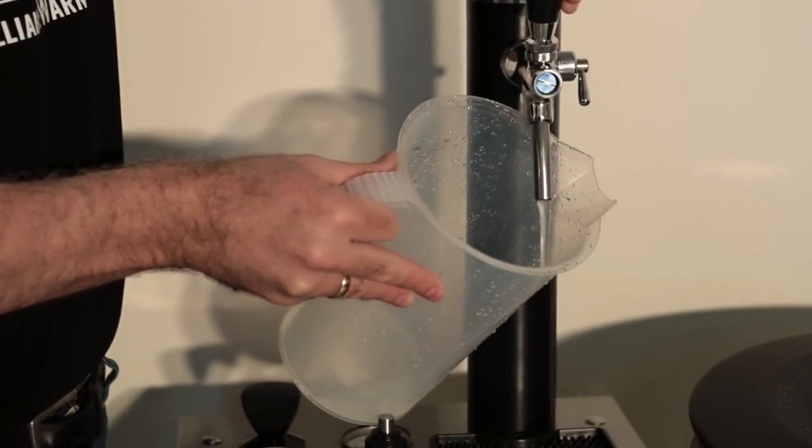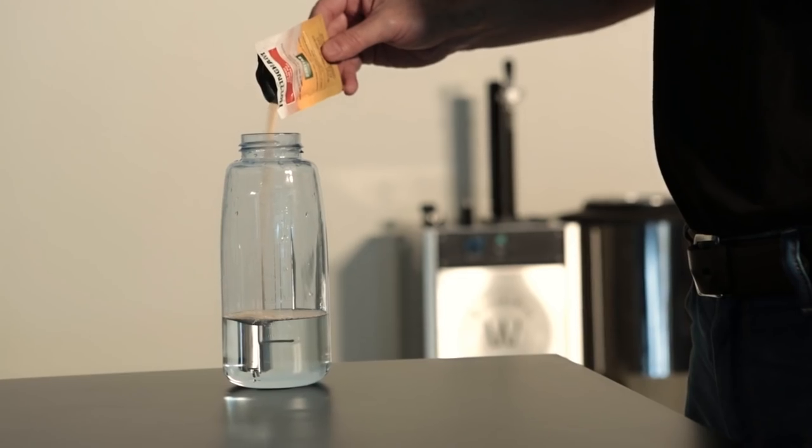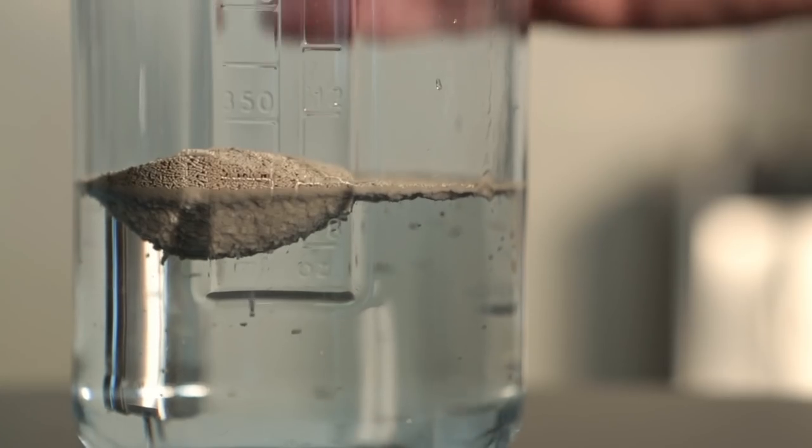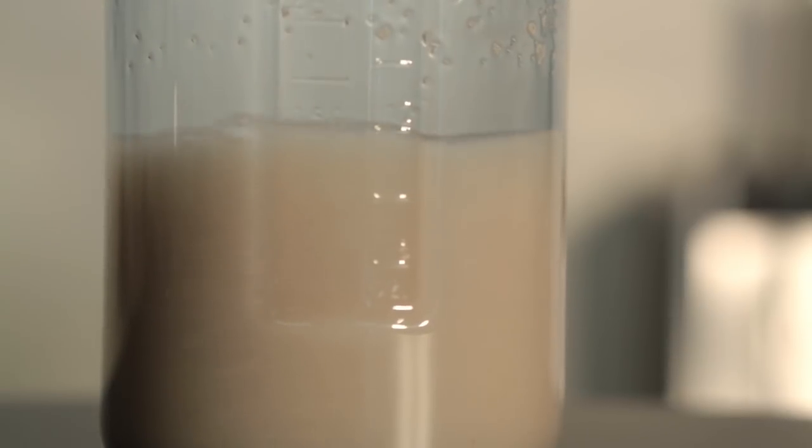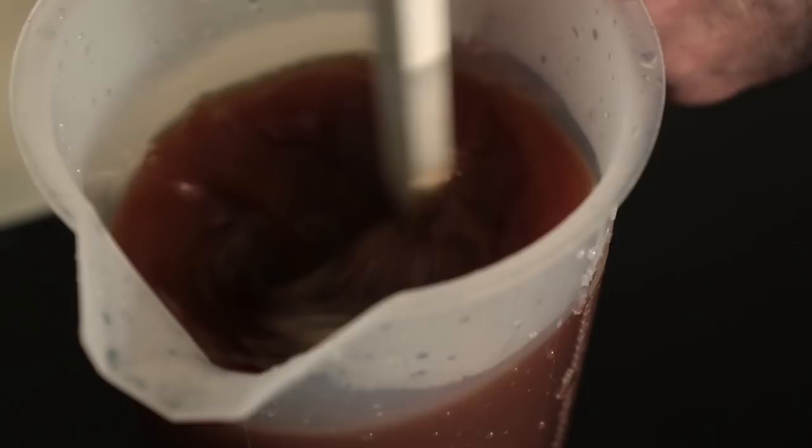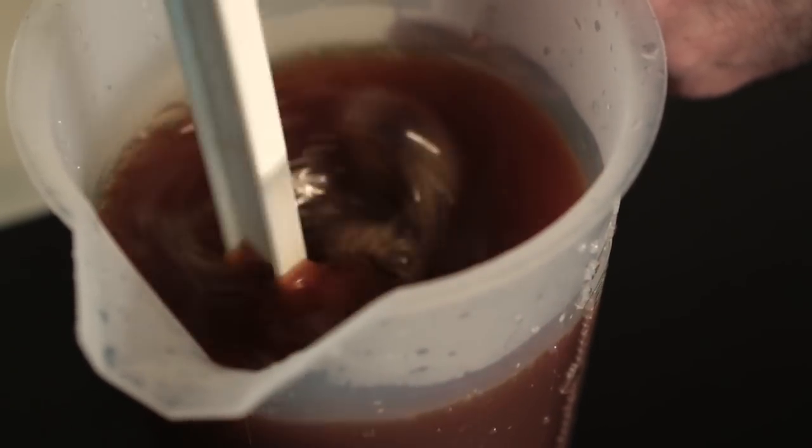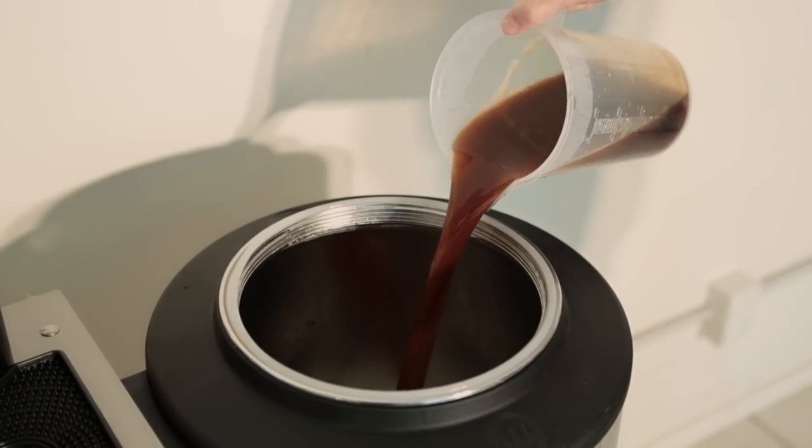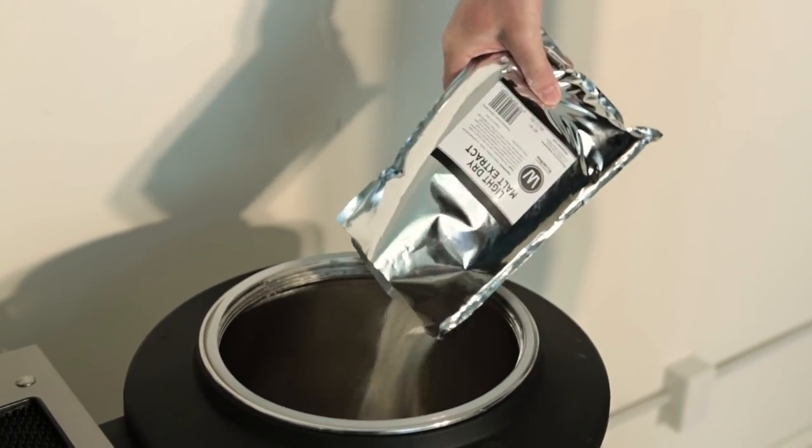Once the brewery has been cleaned and sanitized, you can then add the ingredients. First, you rehydrate the dry yeast in water. Next, you dissolve the liquid malt extract in hot water and add that to the brewery. You can then add the dry malt extract and stir it well to help dissolve it.